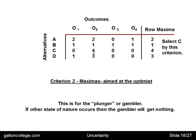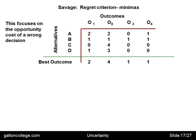Here's another criterion called the regret criterion, based on the work of Savage. It focuses on the opportunity cost — the penalty for making the wrong decision. We look at the best payoff for each outcome: the best payoff for outcome 1 is 2; for outcome 2 it's 4 (with decision C); for outcome 3 it's 1; and for outcome 4 it's 1. Now we've identified the best outcomes for each state of nature.